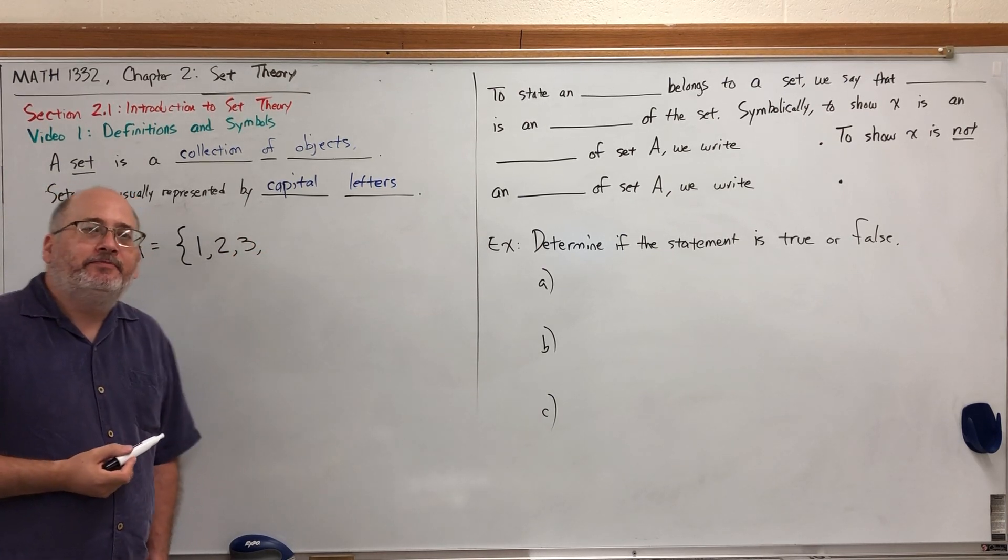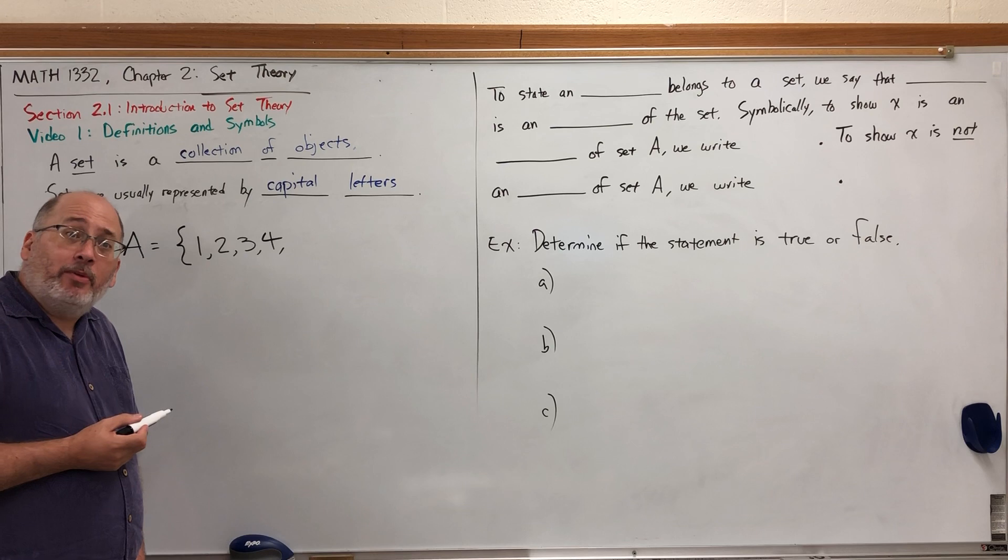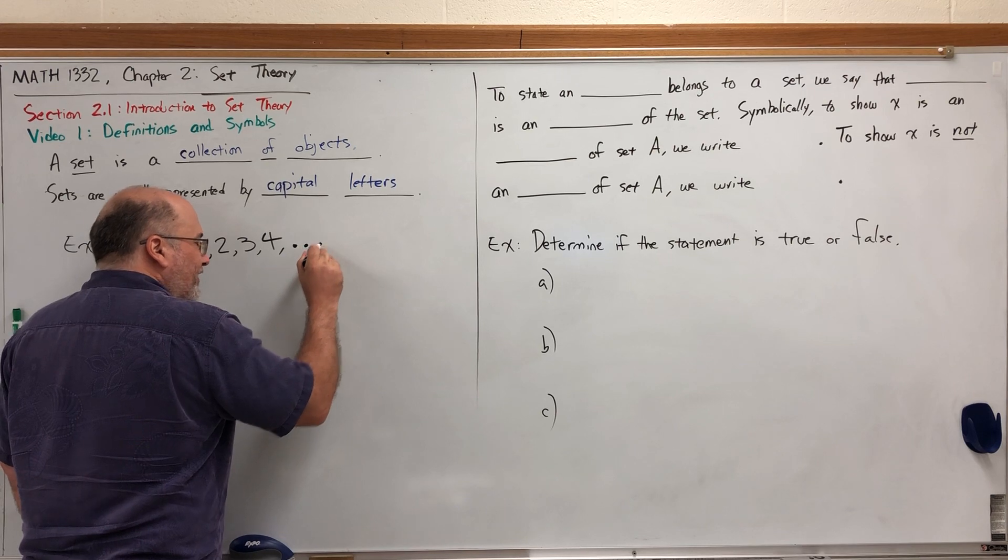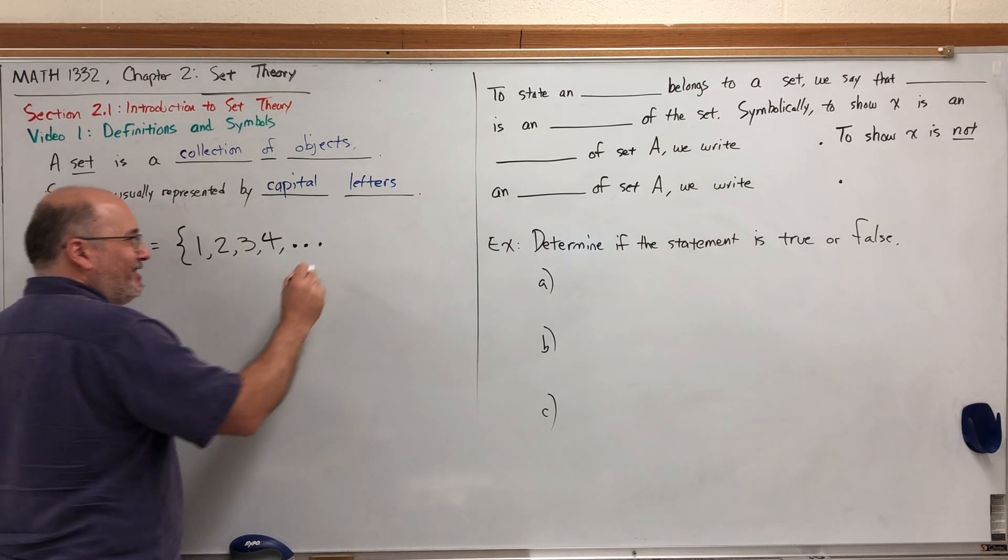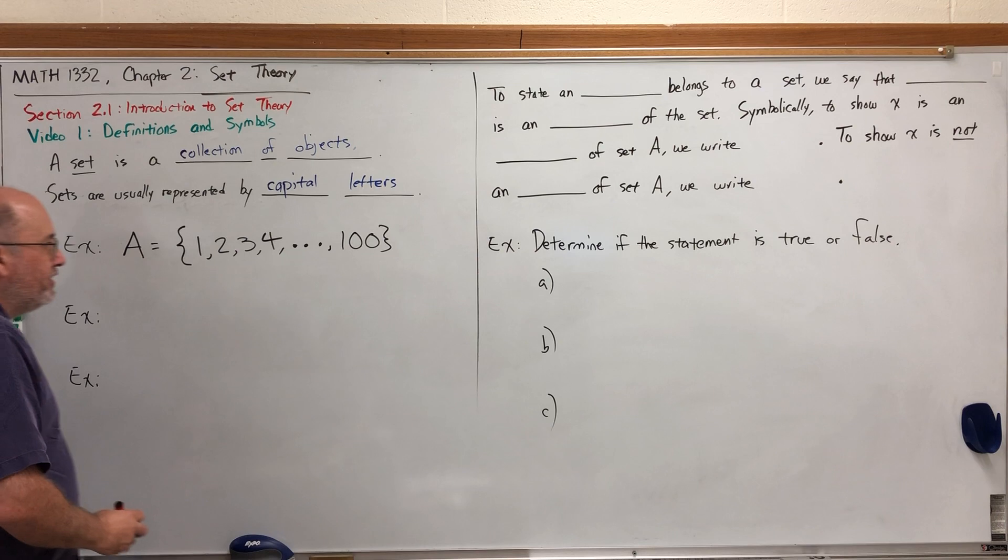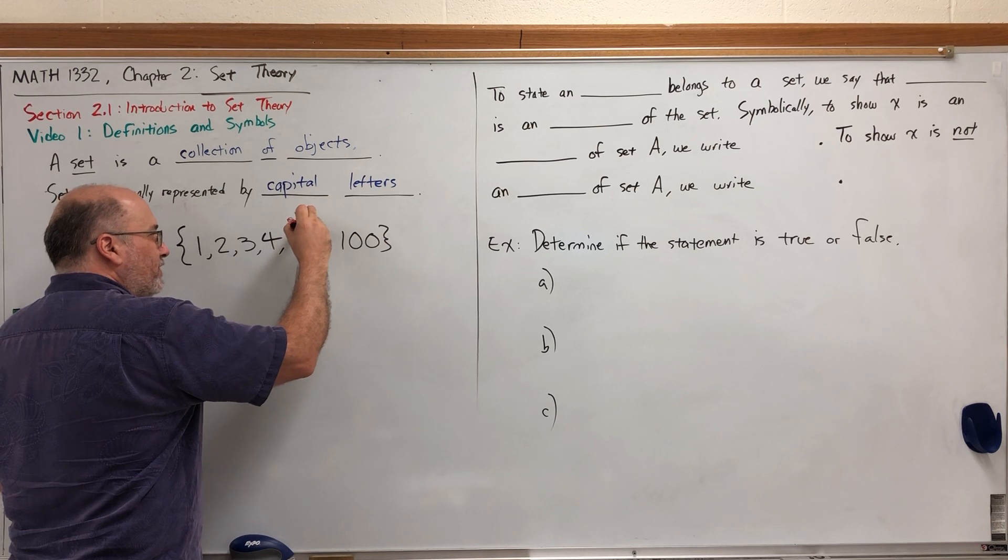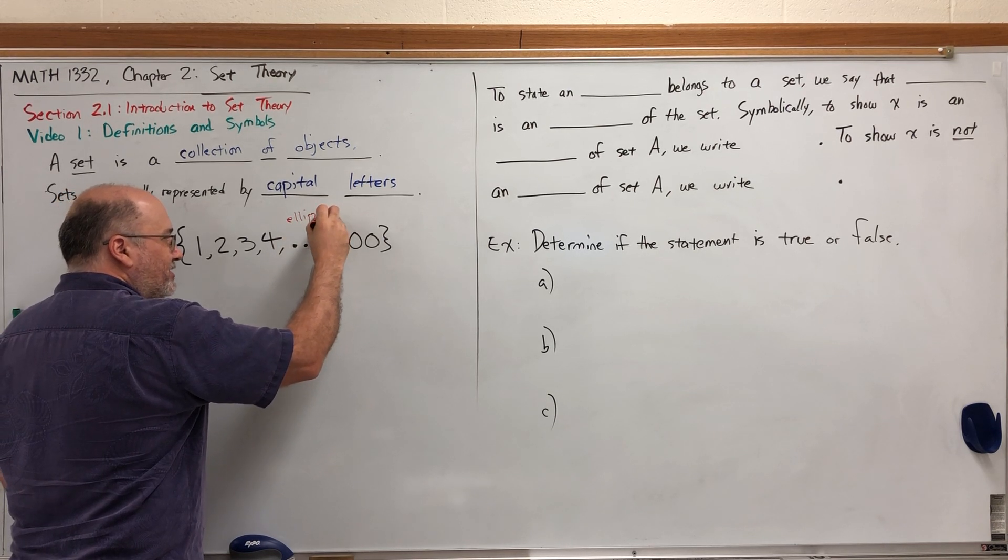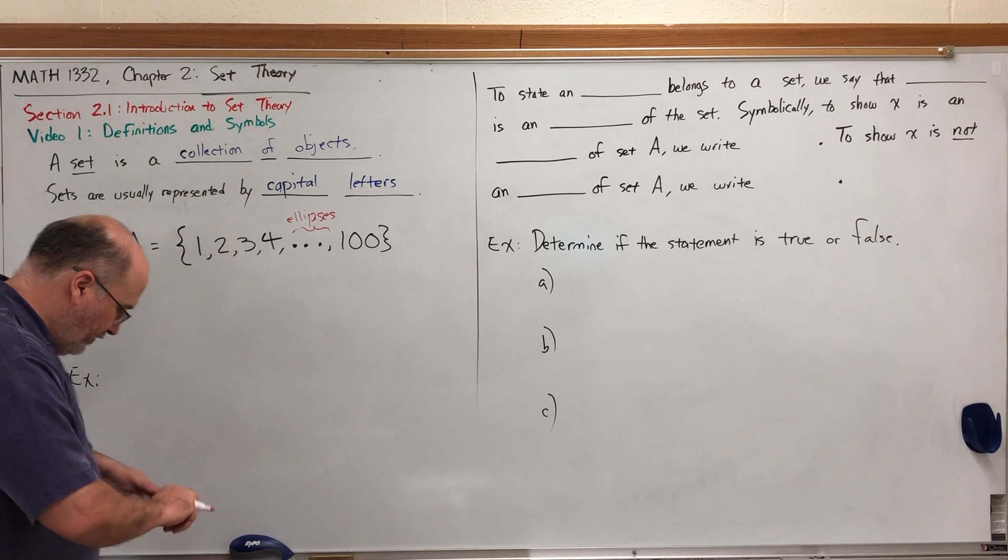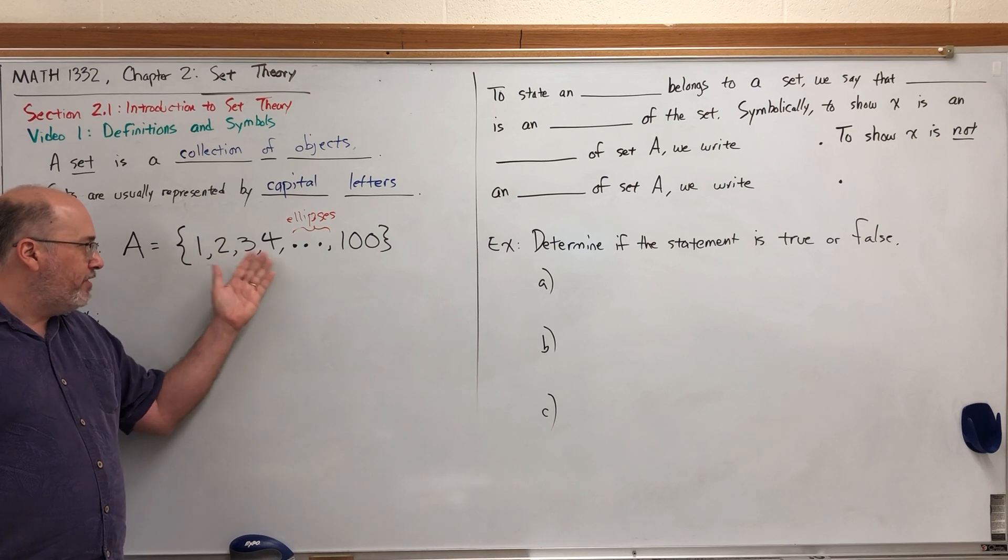If we just want to list the elements of a set, we can list them in a set of braces. Let's say I want set A to contain the numbers 1 through 100. Could I write every number? Of course. Must I? Not necessarily. I can put three dots to imply that this pattern continues until I tell it to stop.